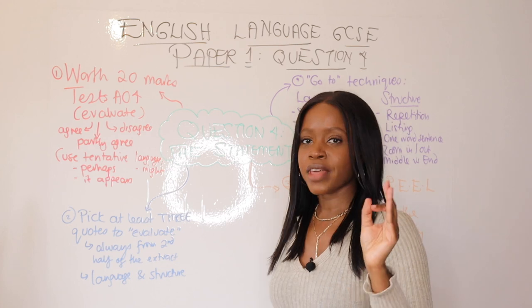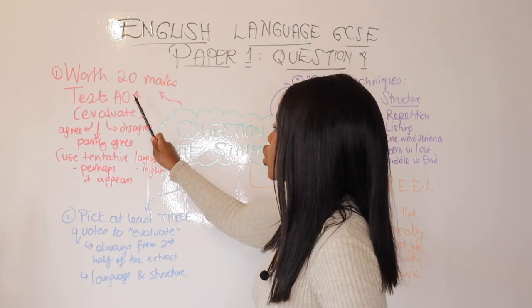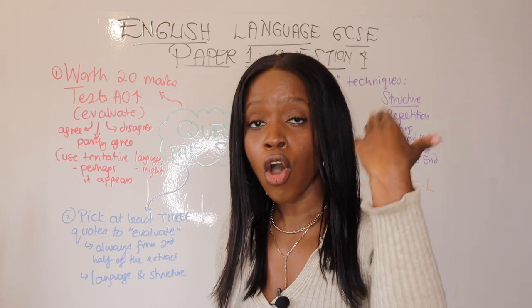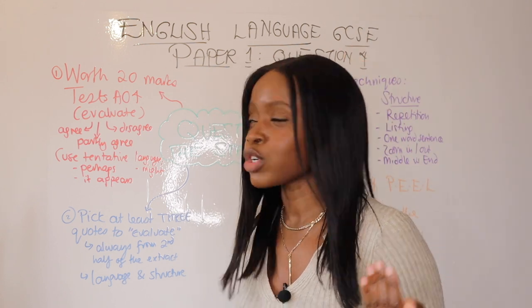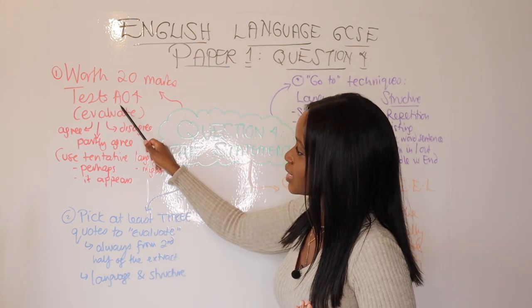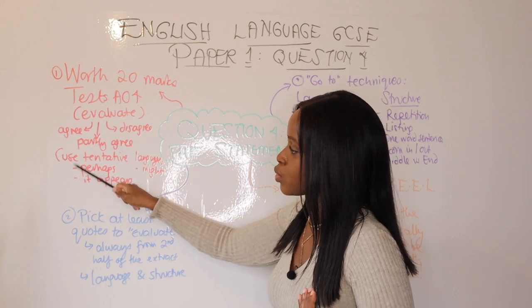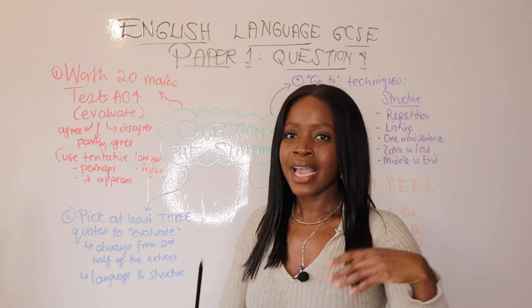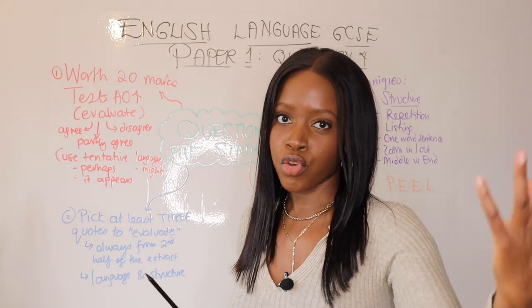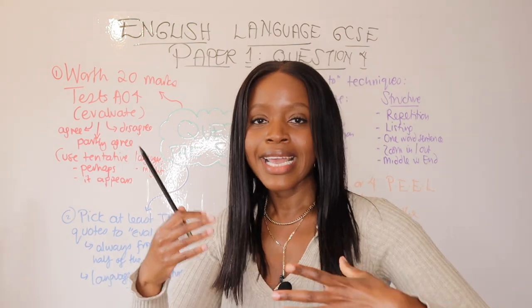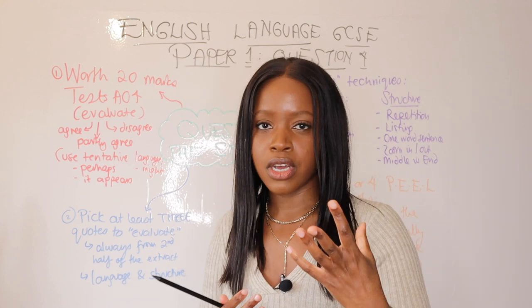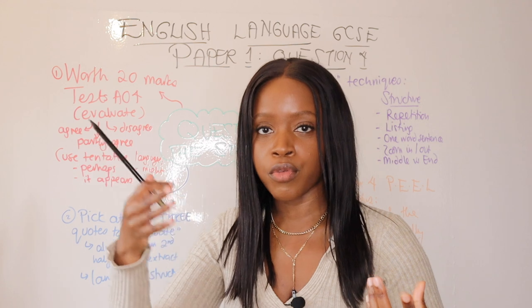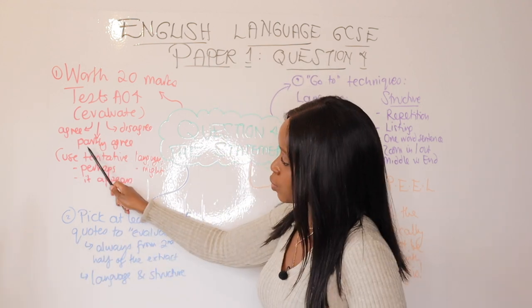Always begin with the end in mind. Number one: always remember that this question in paper one is worth 20 marks — it's worth half the marks available for section A in language paper one. It always tests your evaluation skills: do you agree with a student statement, do you partly agree, or do you disagree? The examiners don't tend to care that much whether you agree or disagree — it's more about the quality of your discussion, the analysis, and the techniques that you refer to.